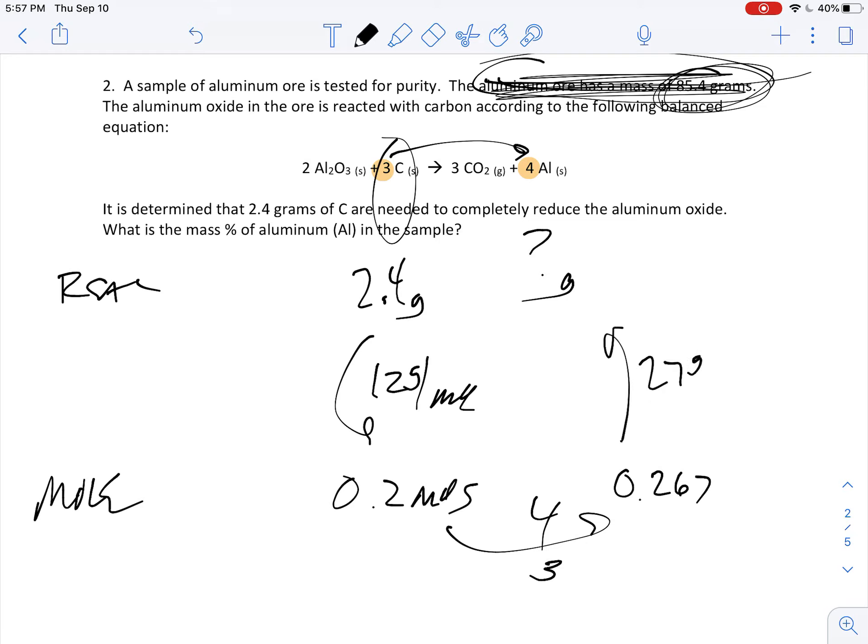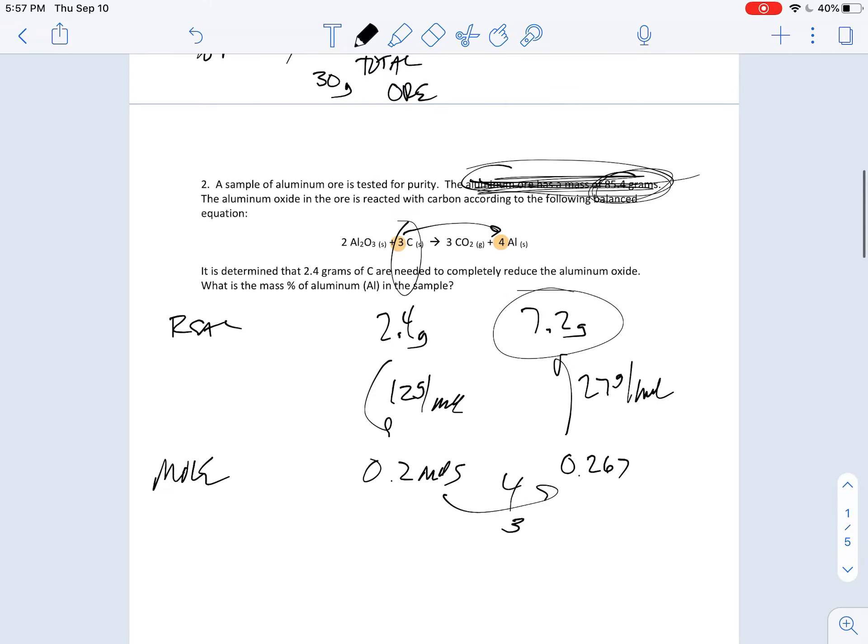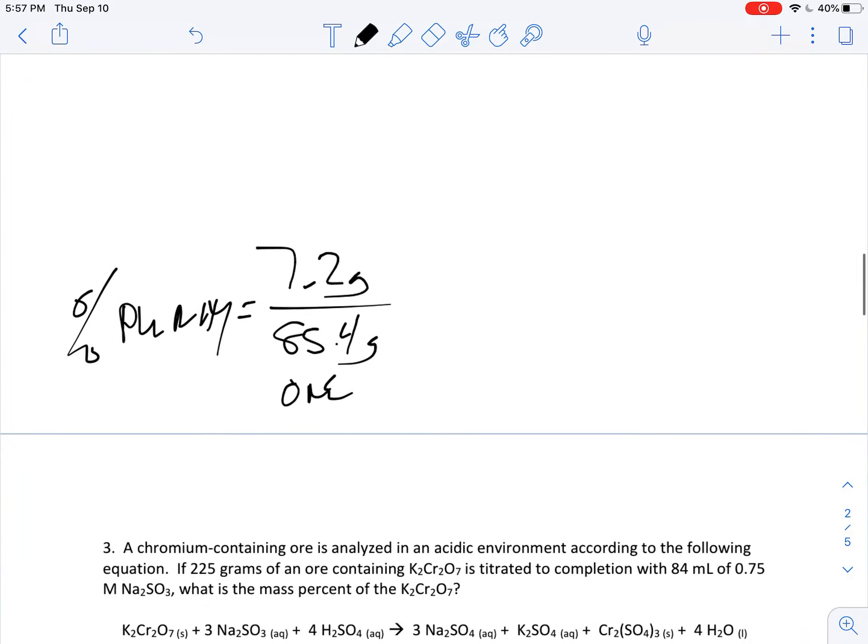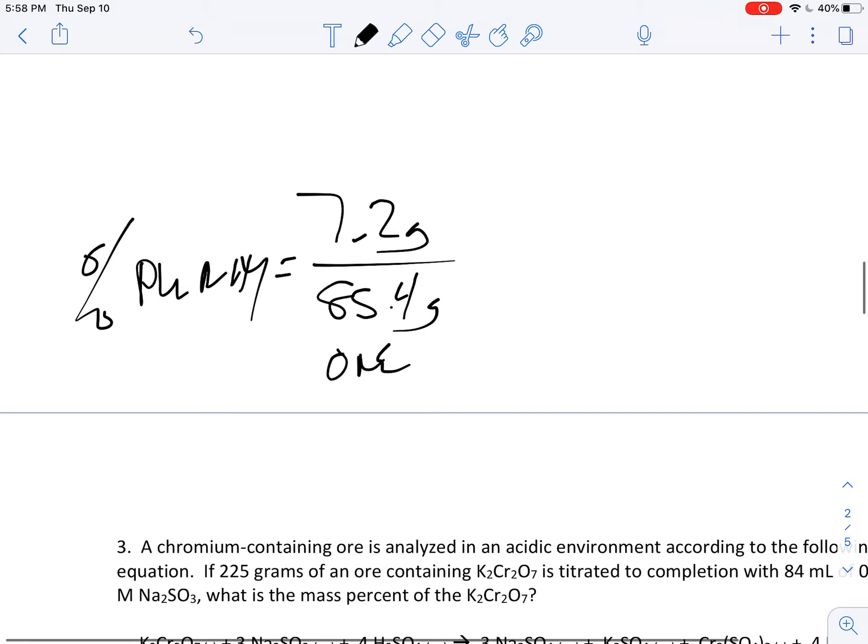And then I'm going to come back up by 27 grams per mole for aluminum there. And when I do the math on that, I should end up with about 7.2 grams. So apparently in this ore, 7.2 grams is actually aluminum out of the 85.4 grams of the ore times 100%. So that's going to be about 8.4 percent.